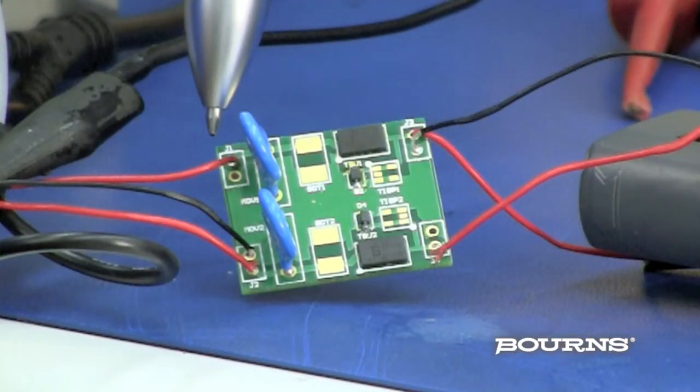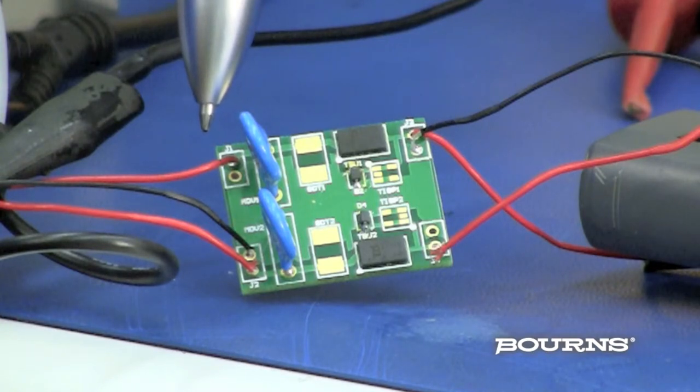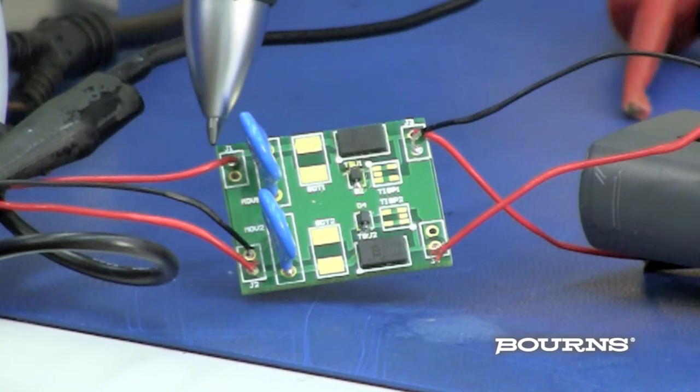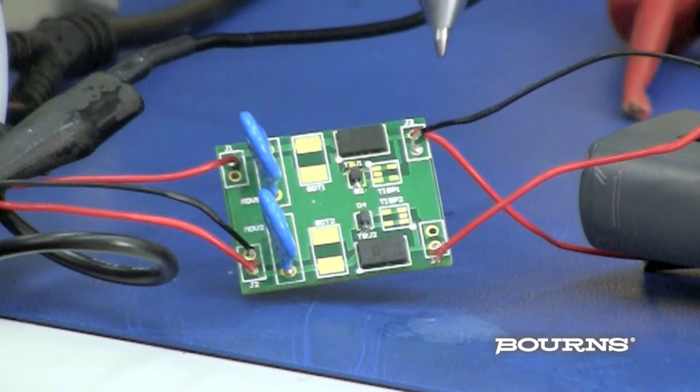Since RS-485 is a differential interface, one protector per signal line is utilized. The evaluation board is placed between the transient source and protected load. The transient source enters at the input terminals. The load being protected connects at the output terminals.